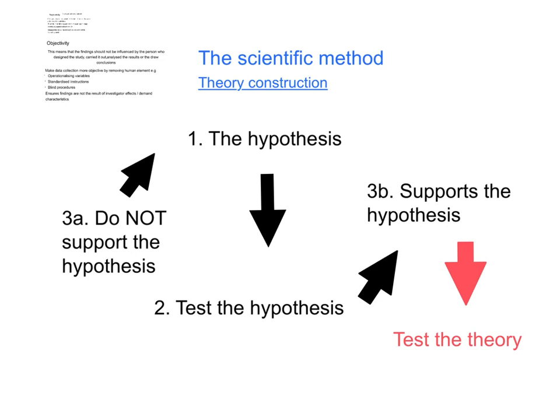The second part of theory construction is to test the hypothesis. An appropriate method of investigation should be chosen, which will allow you to test your hypothesis. After testing, if your results do not support the hypothesis, you go back to the drawing board and rethink your hypothesis again, so that you can develop it and do the theory testing again. If your results do support the hypothesis, then you develop your theory from this. The findings of carefully constructed research that support the hypothesis allow you to begin to form a theory or modify an existing theory.